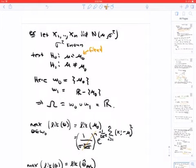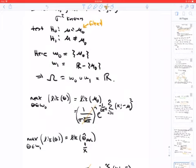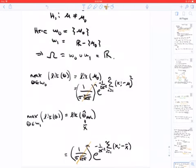And let's take a look at an example here. So I'm going to have x1 to xn iid normal sigma squared known, and this is the same hypothesis test that we talked about for the duality. So here omega naught is just a single point, and omega 1 is the complement of that in the real numbers. So omega is the entire real number line here.